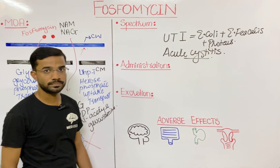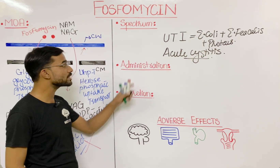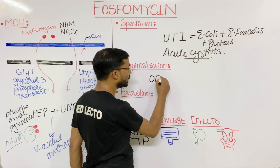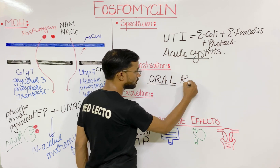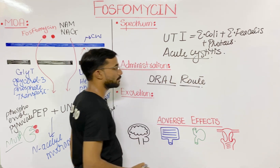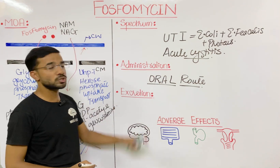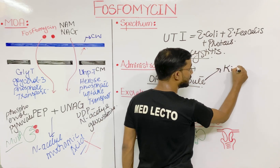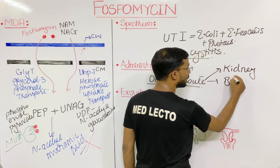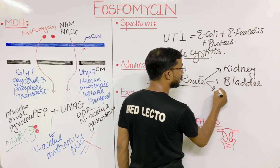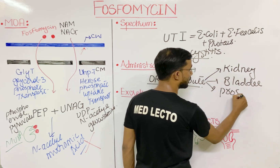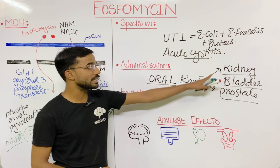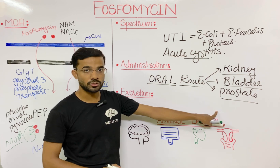Regarding administration, fosfomycin is given through the oral route. The distribution of fosfomycin in the body is largely towards the kidney, bladder, and prostate gland — fosfomycin enters these three organs in high concentration.